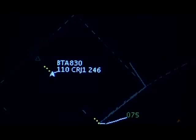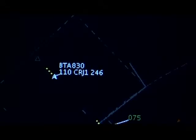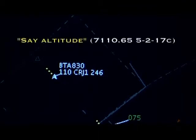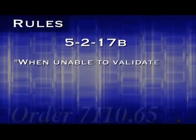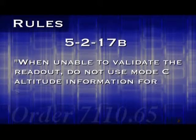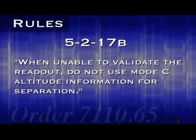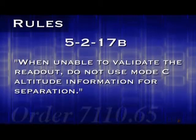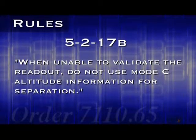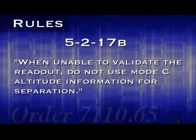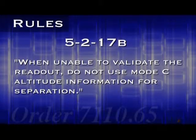Pilots are supposed to report their altitude when they check in on your frequency for the first time. If they do not, you must ask them by saying, 'Say altitude.' What do you do if the information is not valid? Paragraph 17b says: when unable to validate the readout, do not use mode C altitude information for separation. Basically, if an aircraft is providing an invalid mode C altitude, you cannot use that mode C information to apply separation between it or any other aircraft.